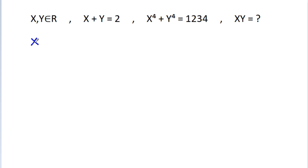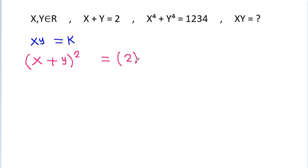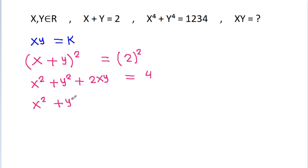So, suppose xy is equal to k. We have x plus y is equal to 2, and if we square both sides, then it is x squared plus y squared plus 2xy equals 2 squared, which is 4. So x squared plus y squared will be equal to 4 minus 2k.